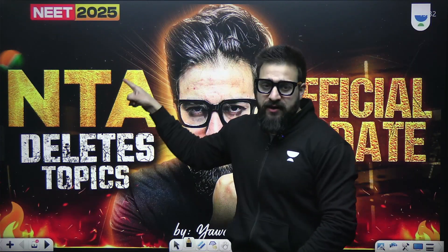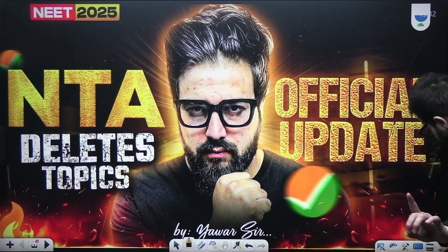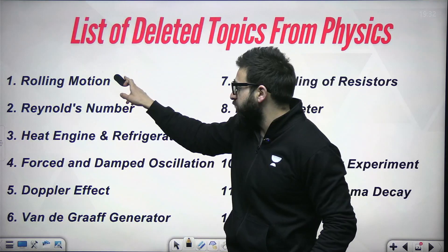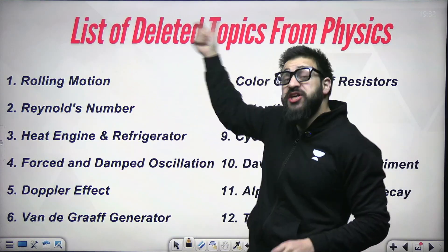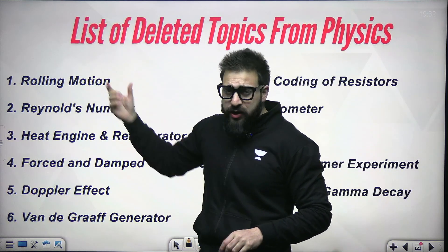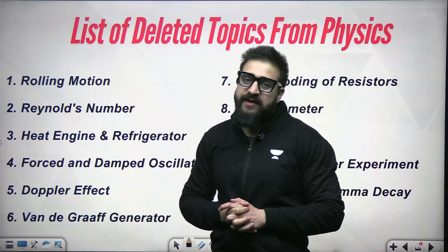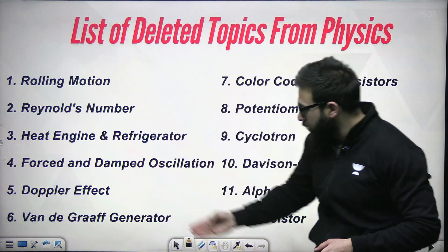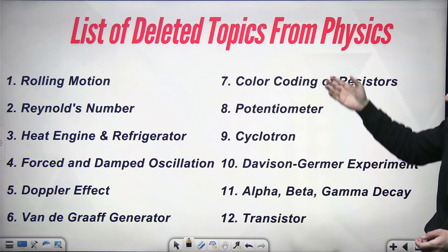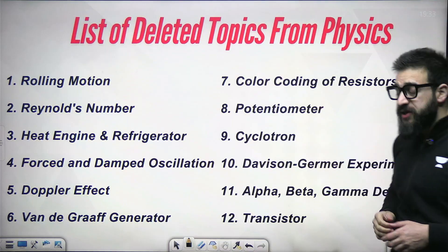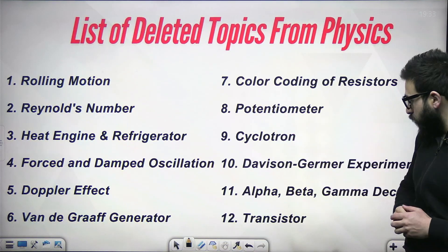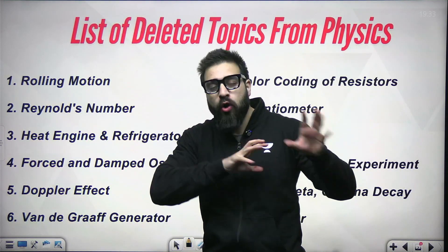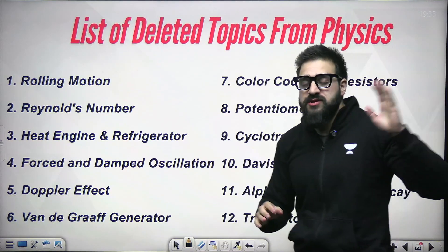The first thing — the list of deleted topics from Physics. Rolling motion is a controversial one: rolling friction is given for NEET 2025 but rolling motion is deleted, so to learn rolling friction you have to learn completely about rolling motion. Then we have Reynolds number, heat engine and refrigerator, forced and damped oscillation, Doppler's effect, Van de Graaff generator, color coding, potentiometer — one of the biggest topics in current electricity — cyclotron, Davisson-Germer experiment, and alpha, beta, and gamma decay.